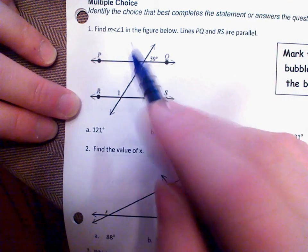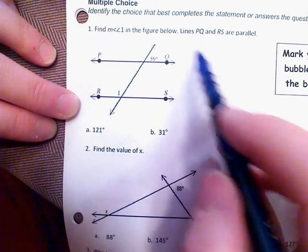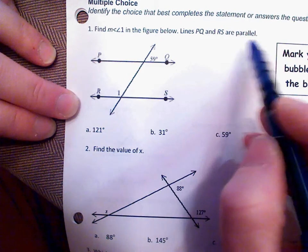For number 1, find measure of angle 1 in the figure below. Lines PQ and RS are parallel.